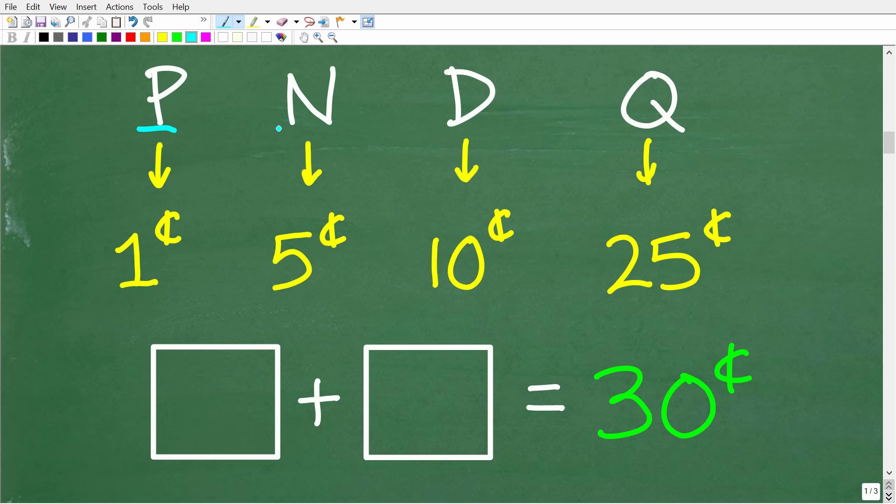So we have pennies, nickels, dimes, and quarters as potential coins. And we know the values of these coins. And we know we have two coins, and the value, the total value of these two coins is equal to 30 cents.